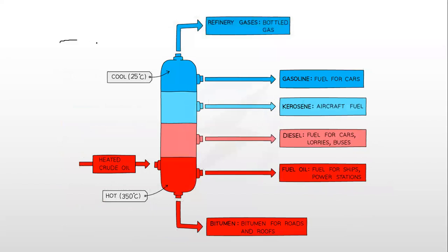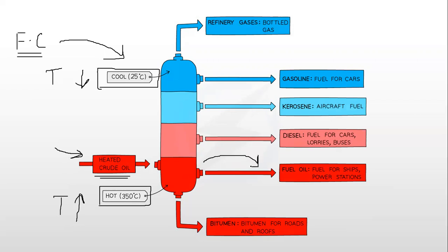For example, this is a fractionating column where fractional distillation of crude oil takes place. Here is where we insert the input of heated crude oil. Temperature down here is 25 degrees Celsius, so it is a lower temperature on the top and a higher temperature at the bottom. Based on boiling points, they get separated.